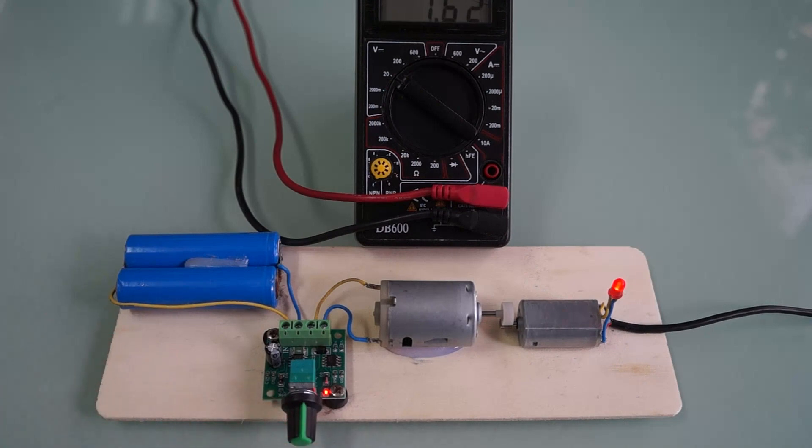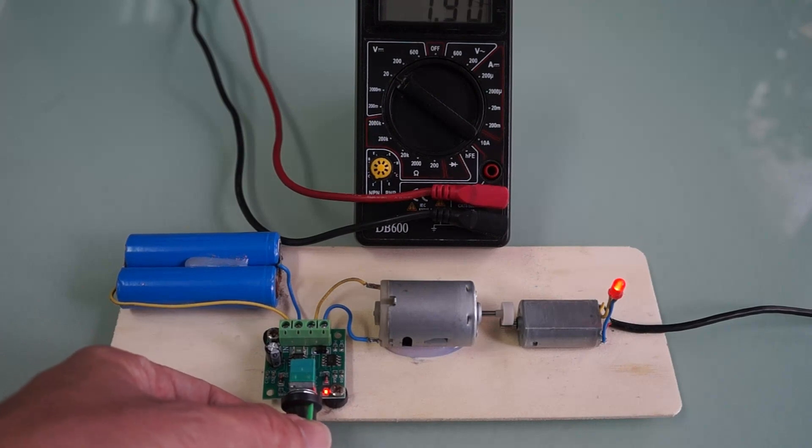To indirectly measure the motor's speed, we'll start by measuring the generated voltage. We connect a digital multimeter across the terminals of the generator.